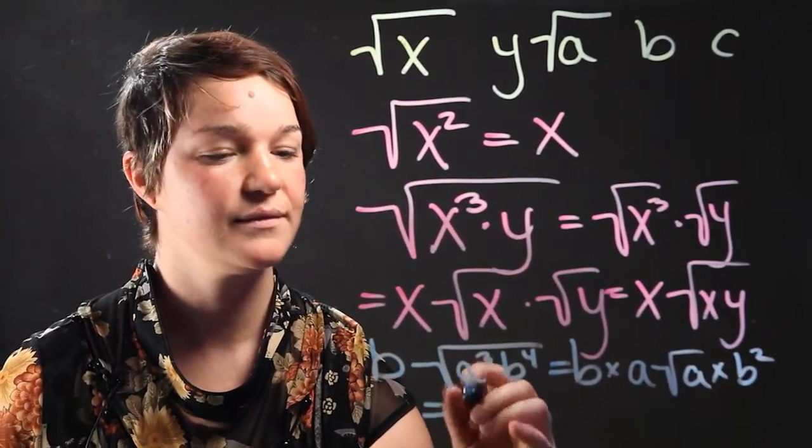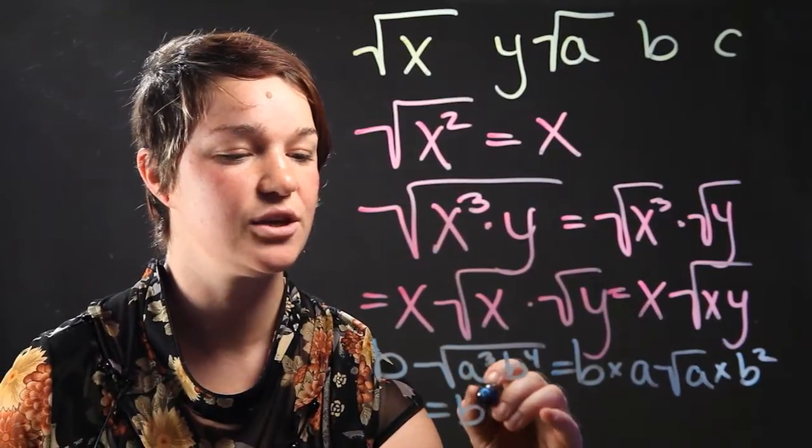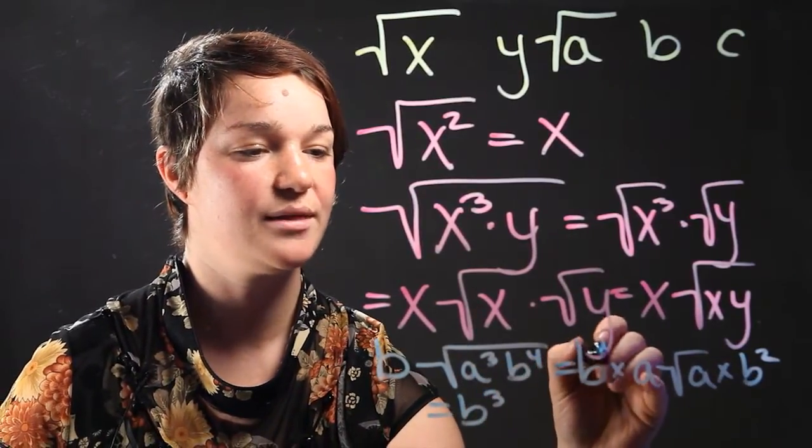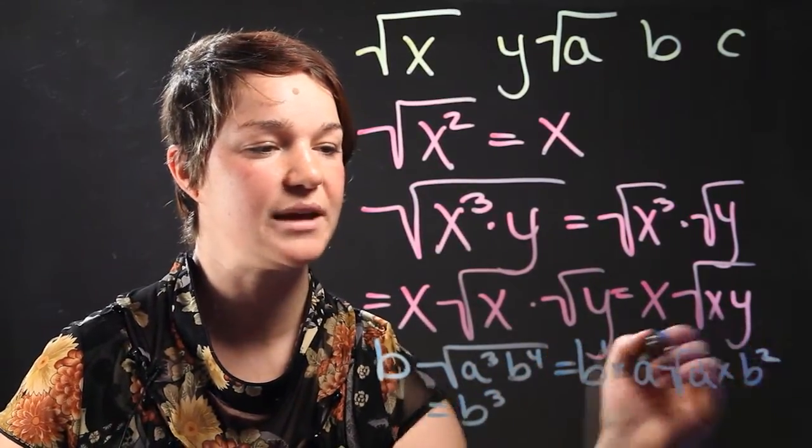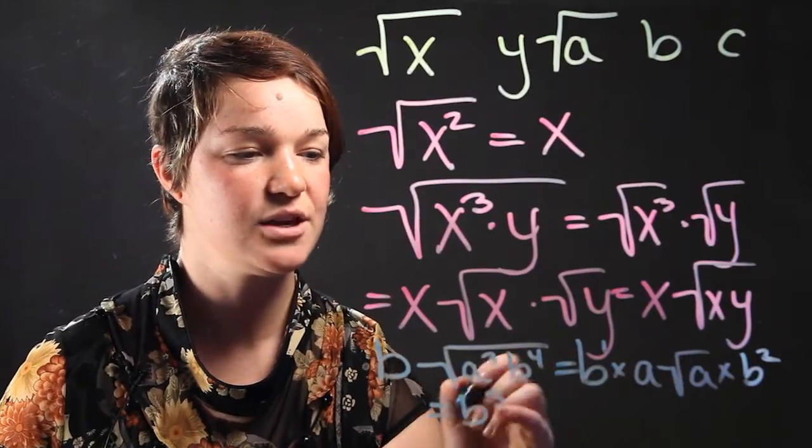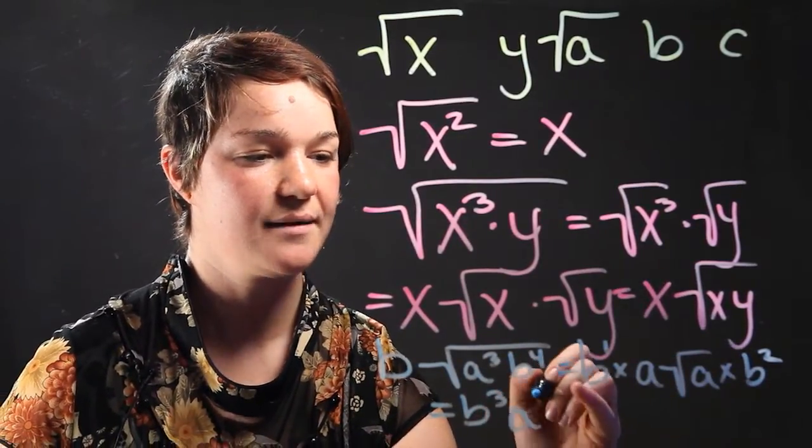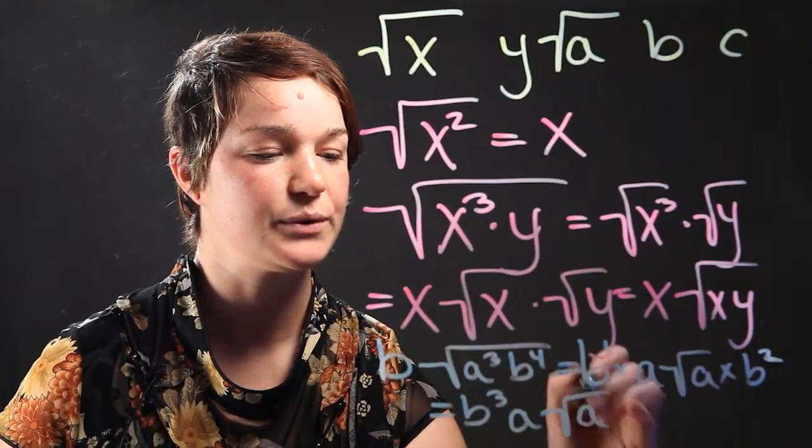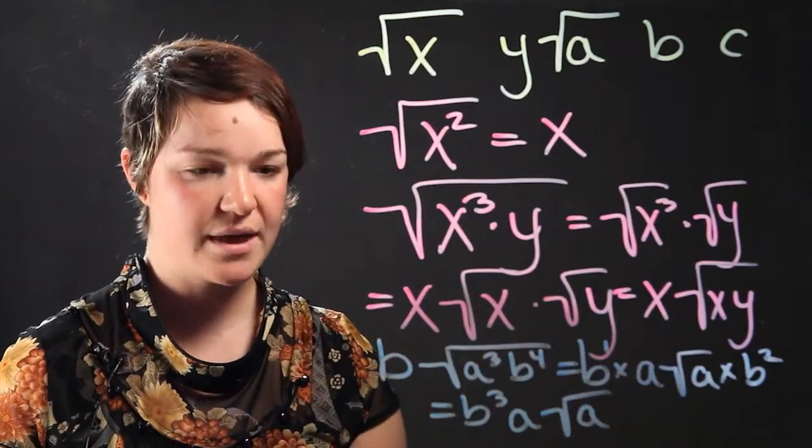the final answer is b cubed because we're going to add the 1 power and the 2 power of b to make b cubed times a times the square root of a. Okay, there you have it.